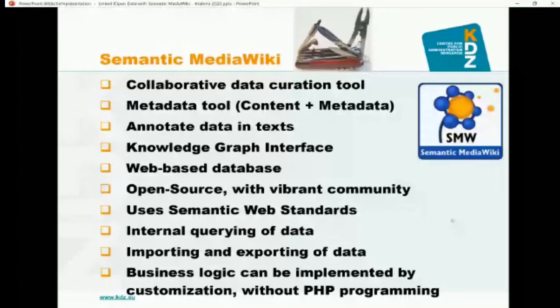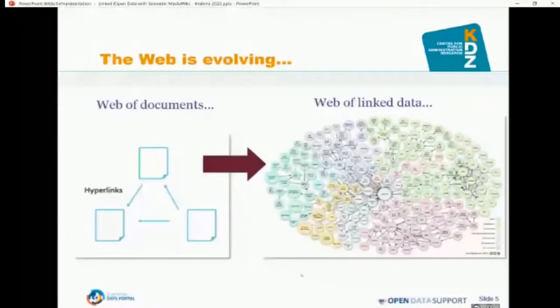Let's go further on how you can do linked open data. The idea — and it's not an idea anymore, it's a practice — is to move from a web of documents where HTML documents link to each other, to a web of linked data. You can see here the linked open data cloud, a very famous picture. Wikidata and DBpedia are in the center, interlinking to all sorts of other data sources. This slide is from the open data support of the European open data portal.